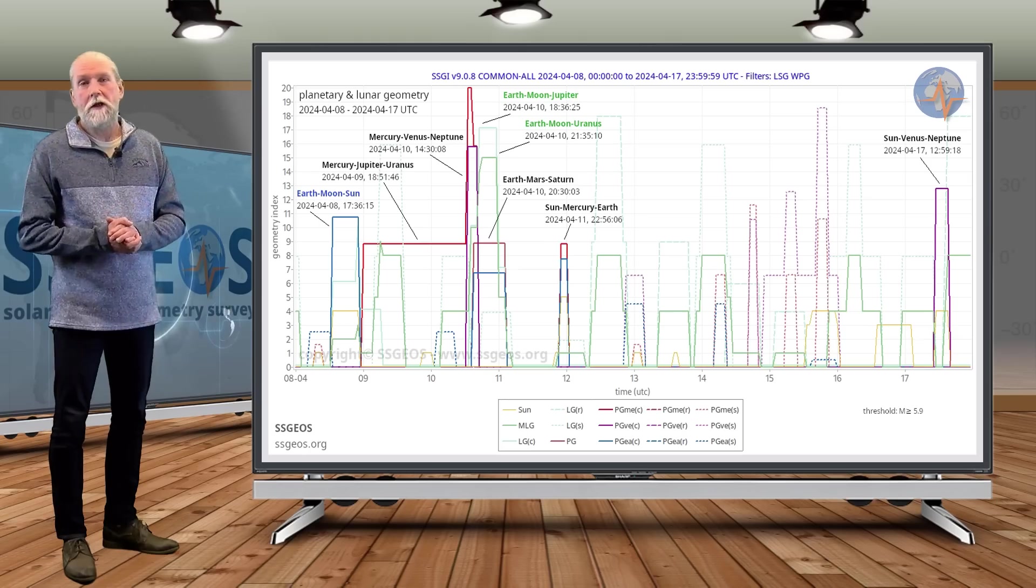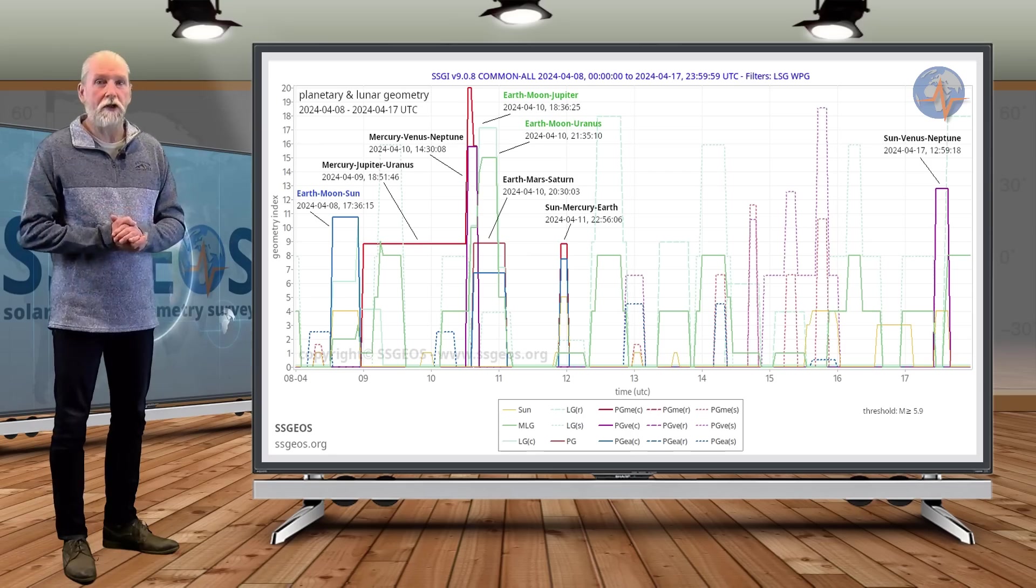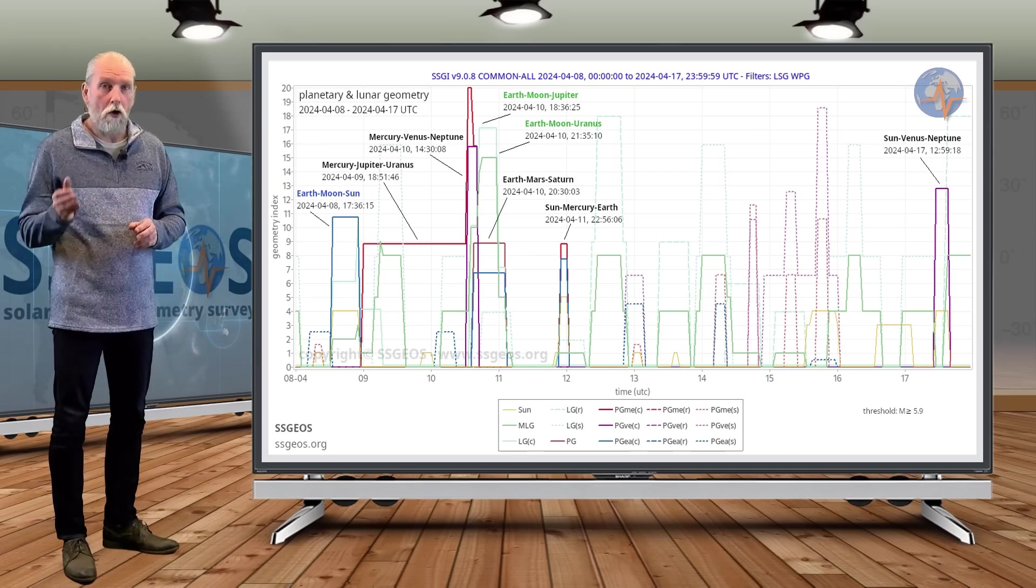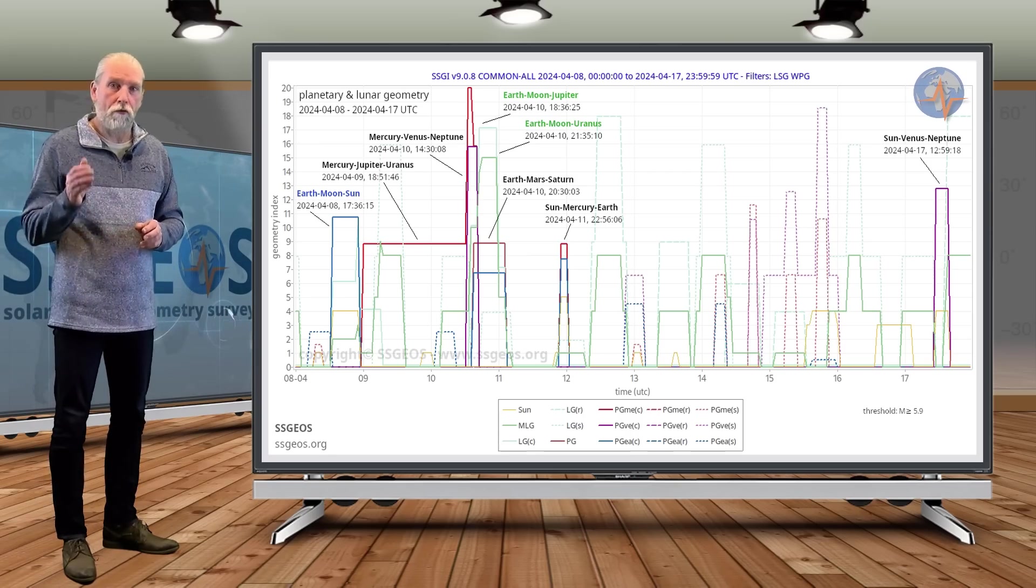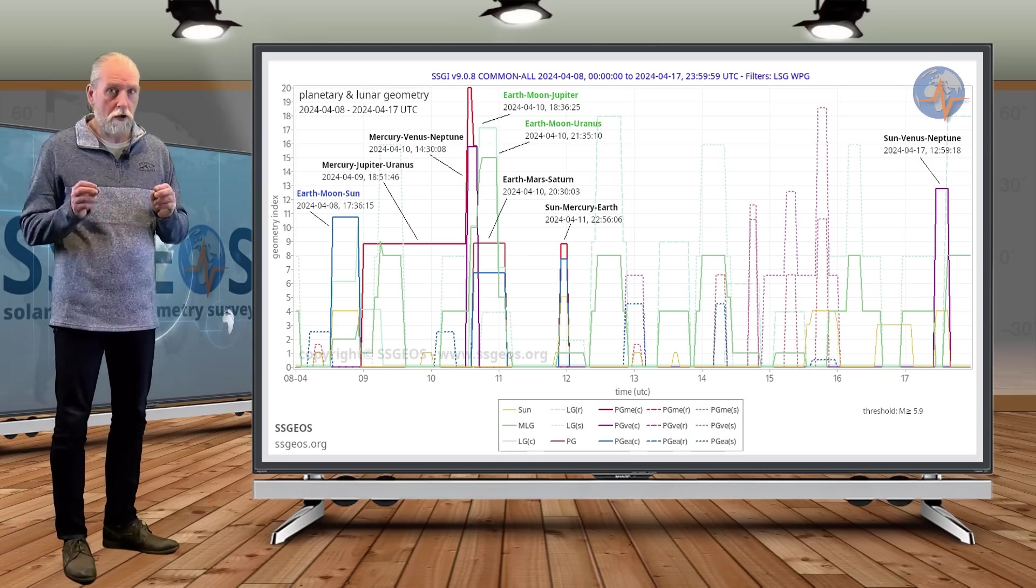You can look up the website, the about page. We have an analysis of the largest earthquakes since 1960. And all of them, the magnitude 9 earthquakes, all of them occurred after a convergence of three planetary conjunctions. So don't underestimate this.